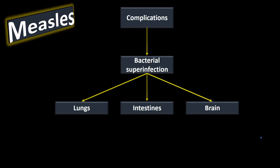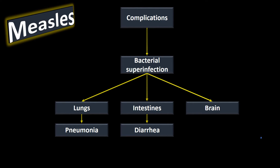Another complication is otitis media, a middle ear infection. In the lungs, a bacterial secondary infection leads to severe pneumonia. In the intestines, it causes severe diarrhea. In the brain, we get encephalitis — inflammation of the brain.